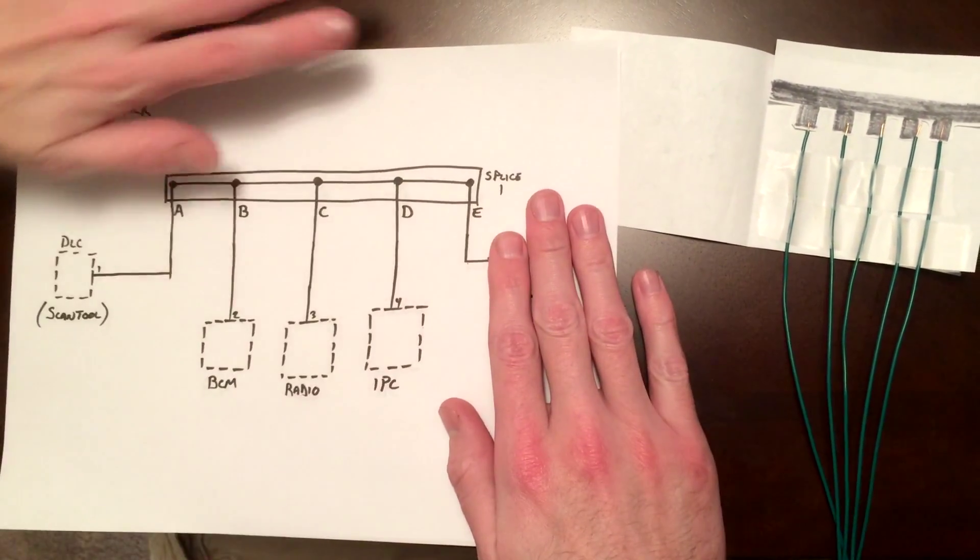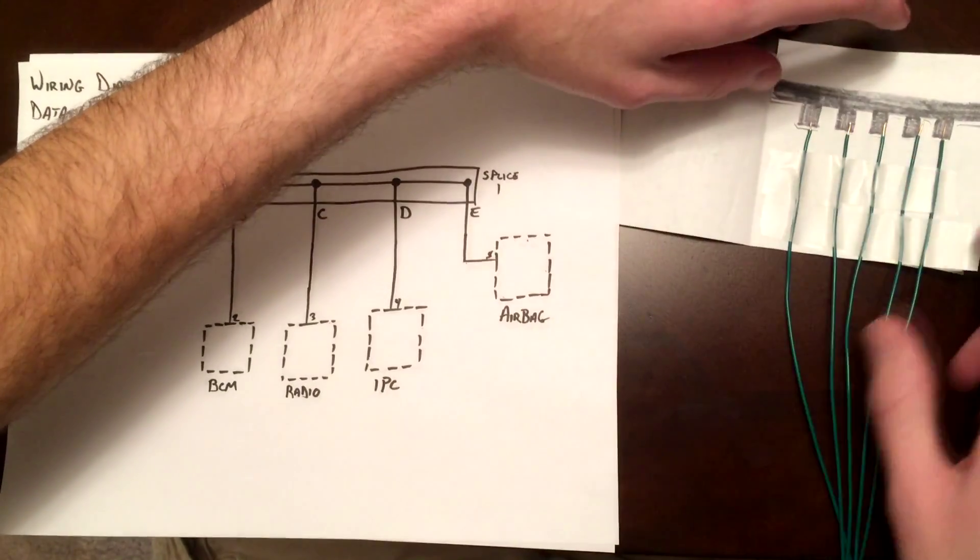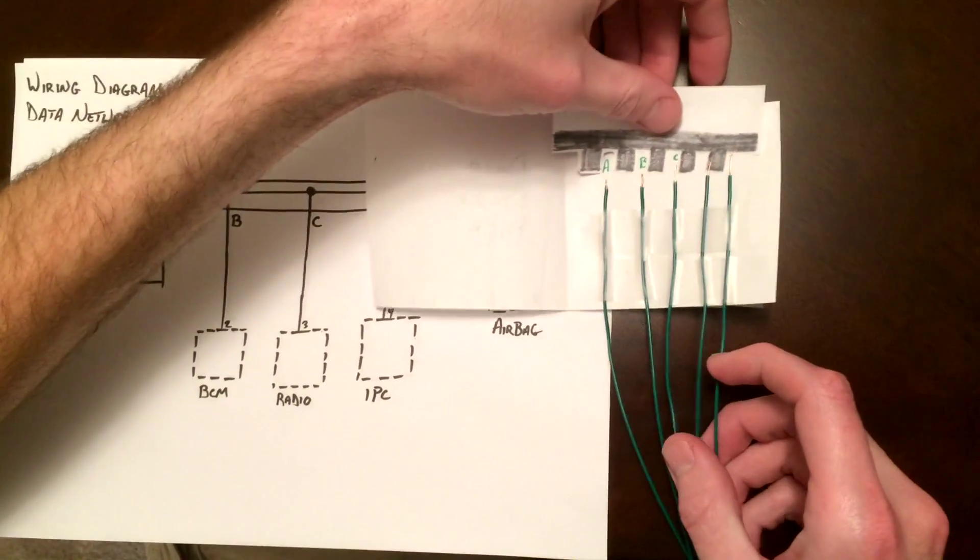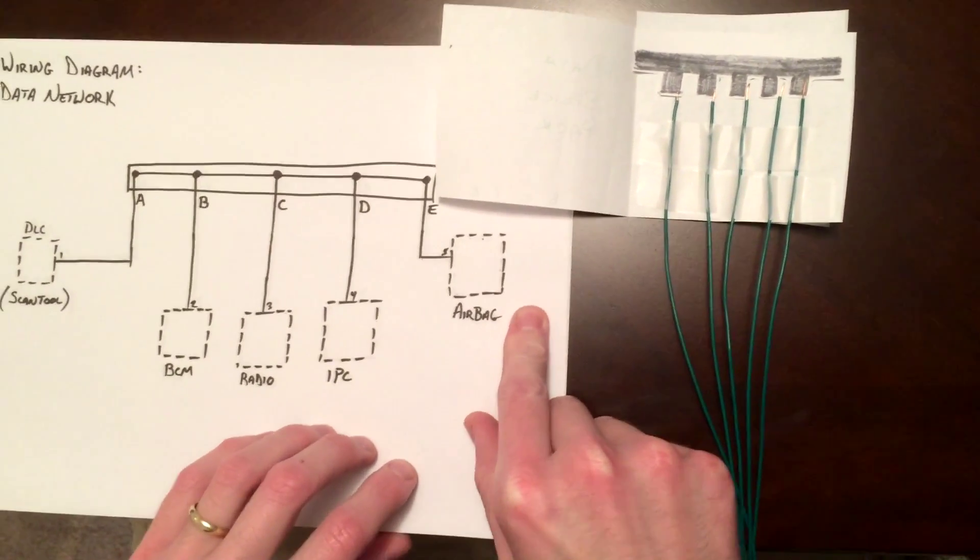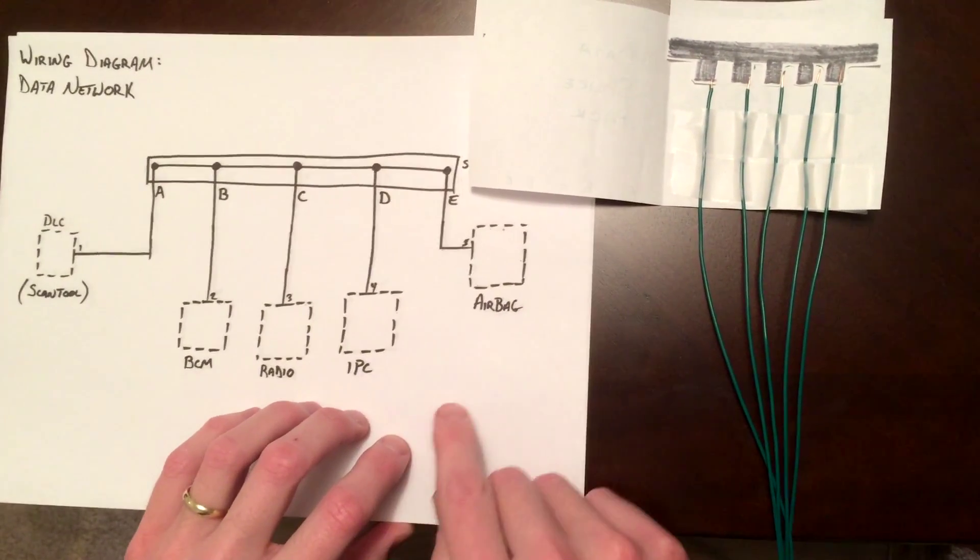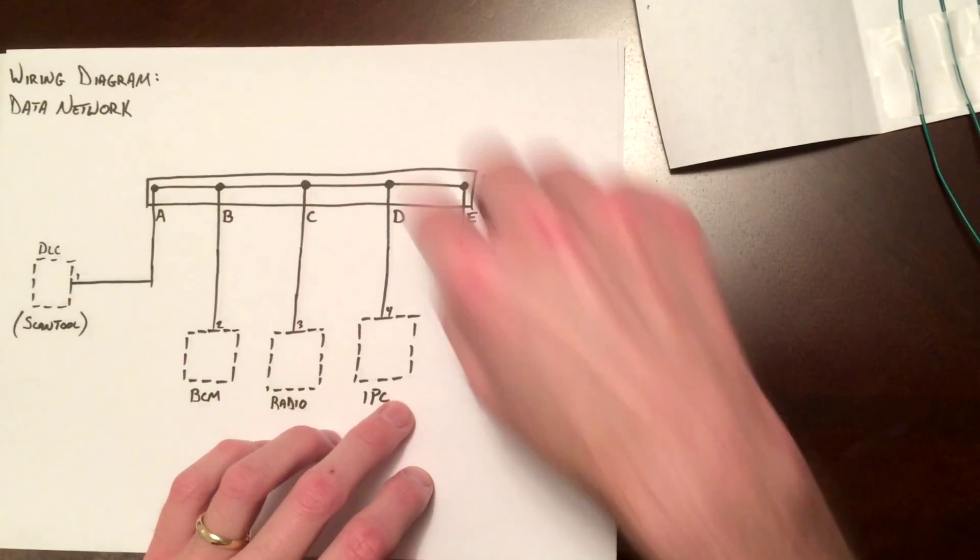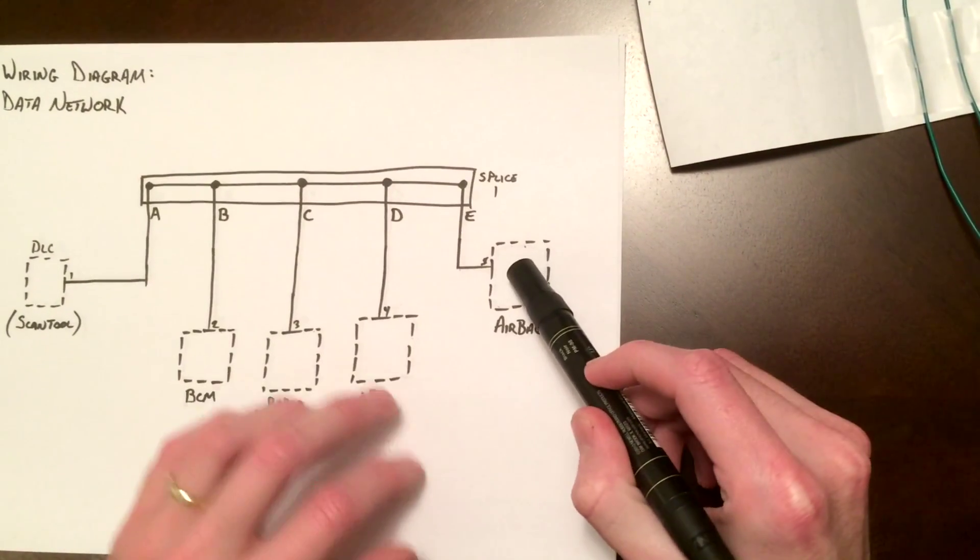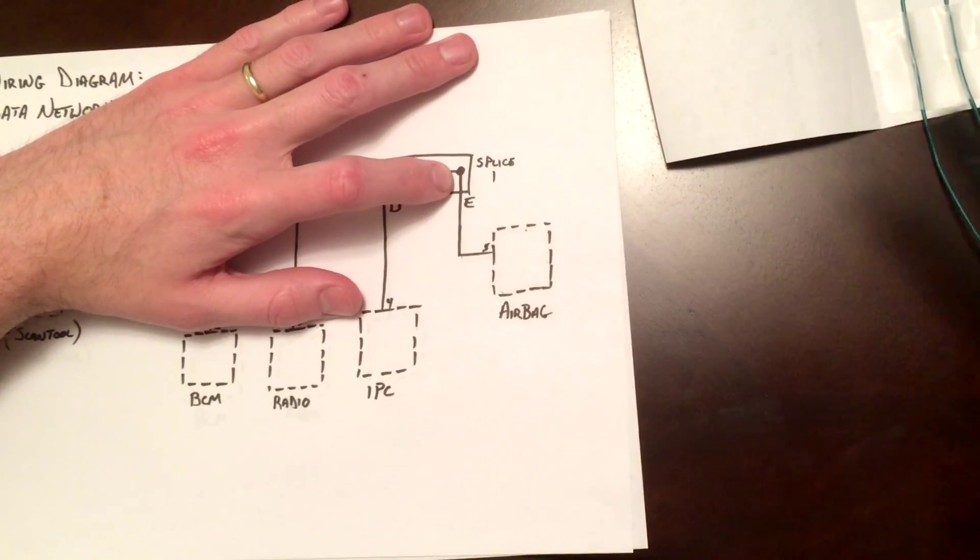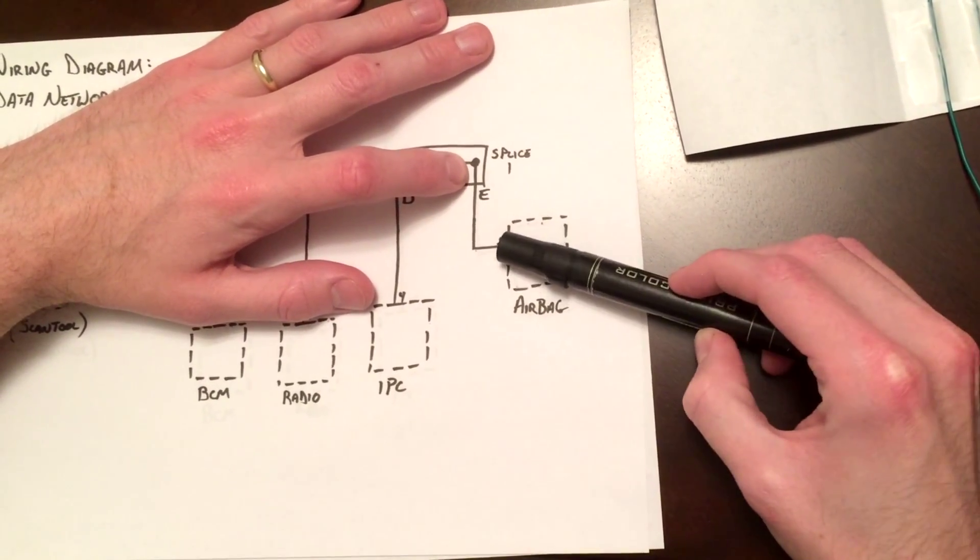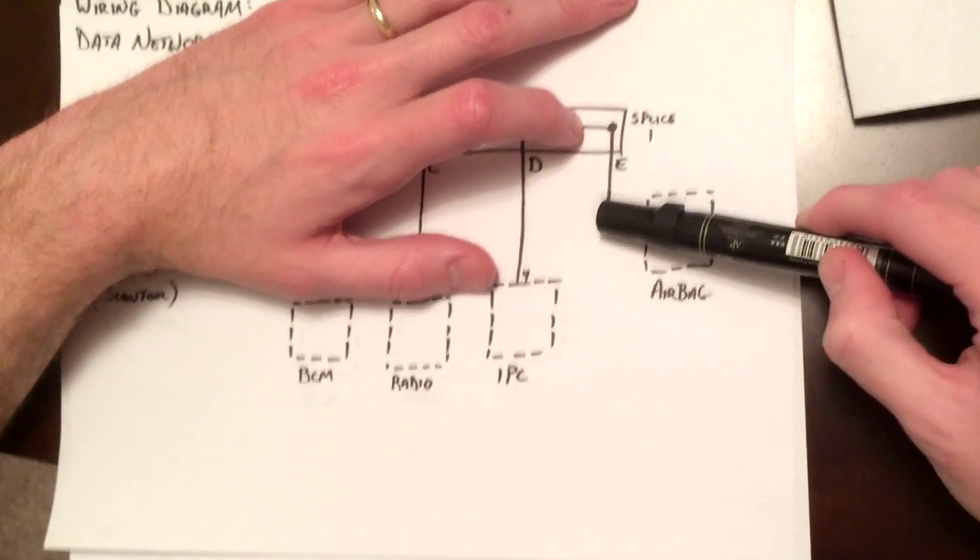But if you find that if you plug in your comb into the splice pack and unplug the airbag module, that you still don't have communication, now you know it's not the airbag module that's causing the issue. It's somewhere from this point, from the splice pack, to the airbag module. There's something wrong with that wire.